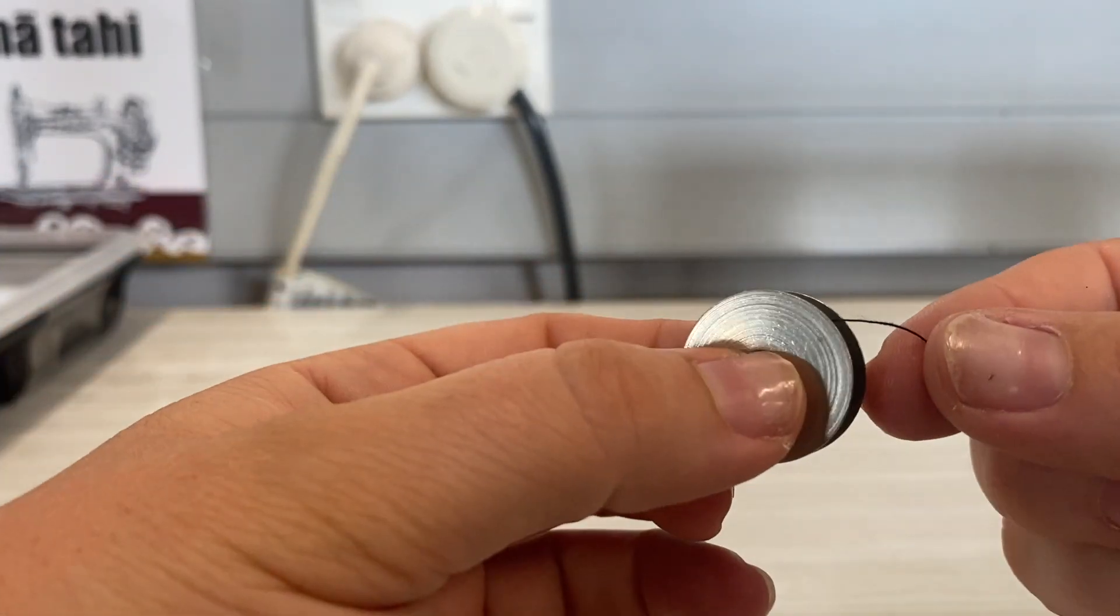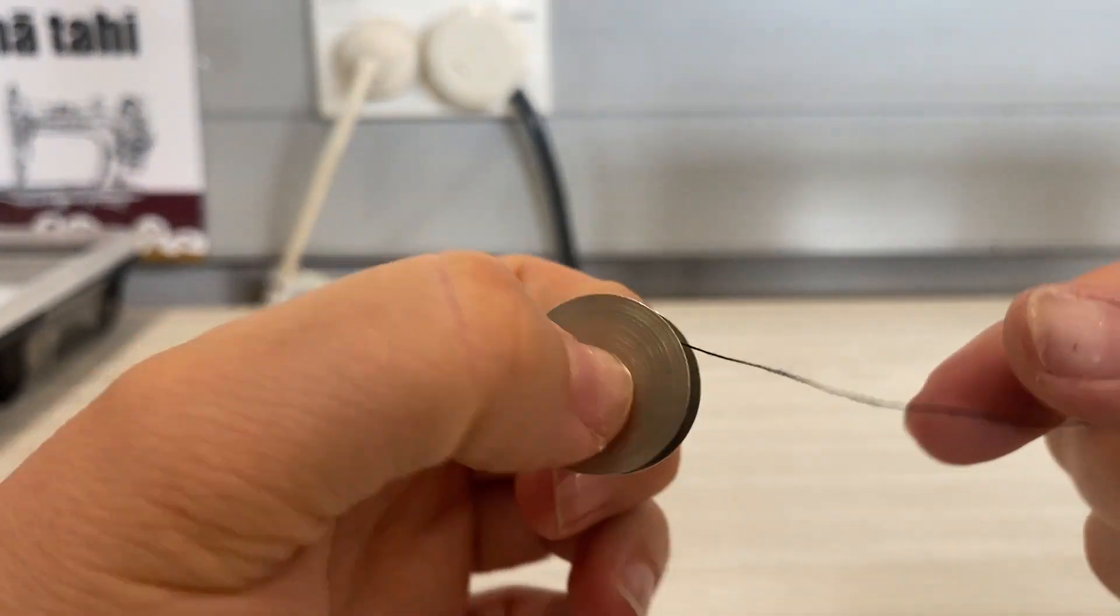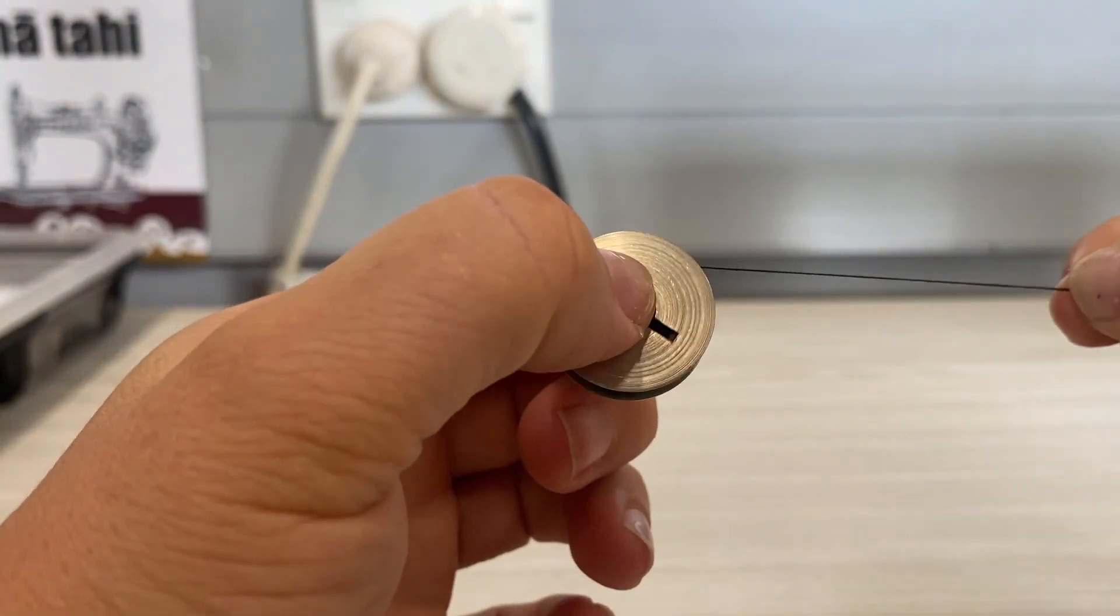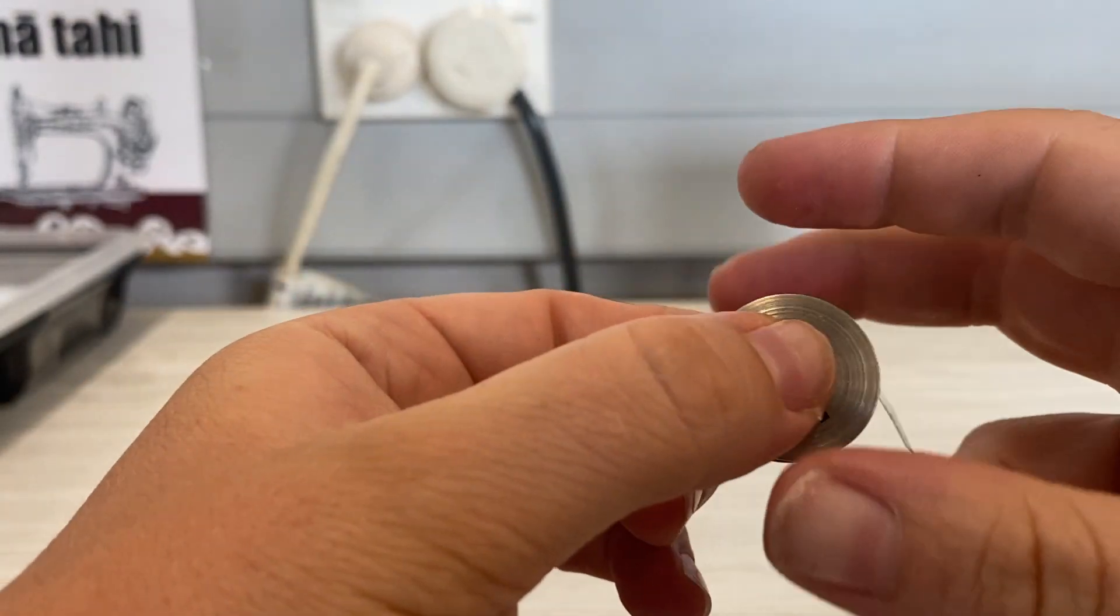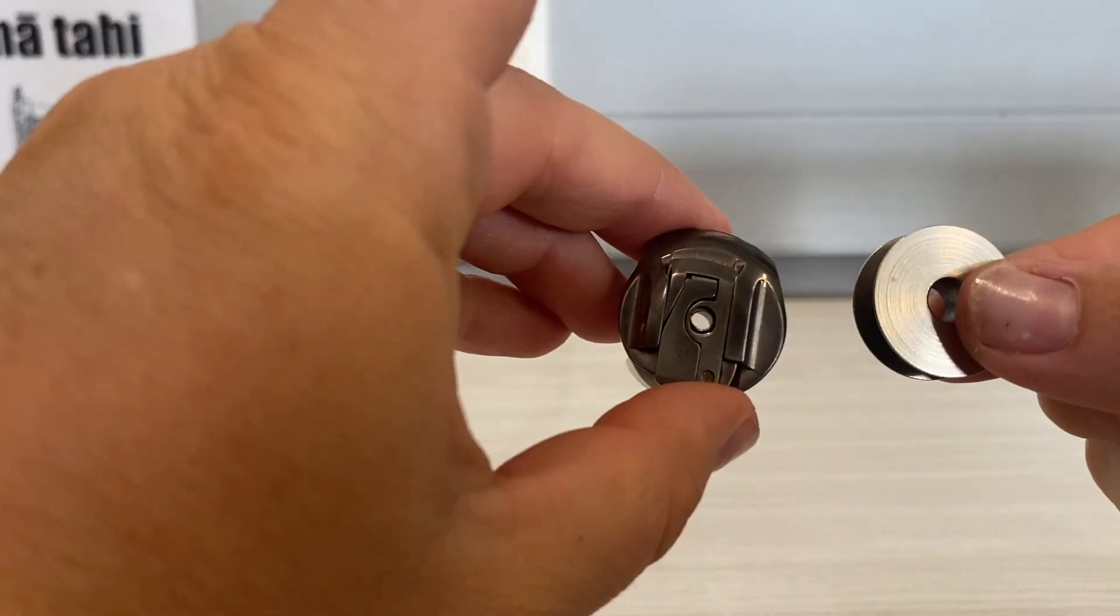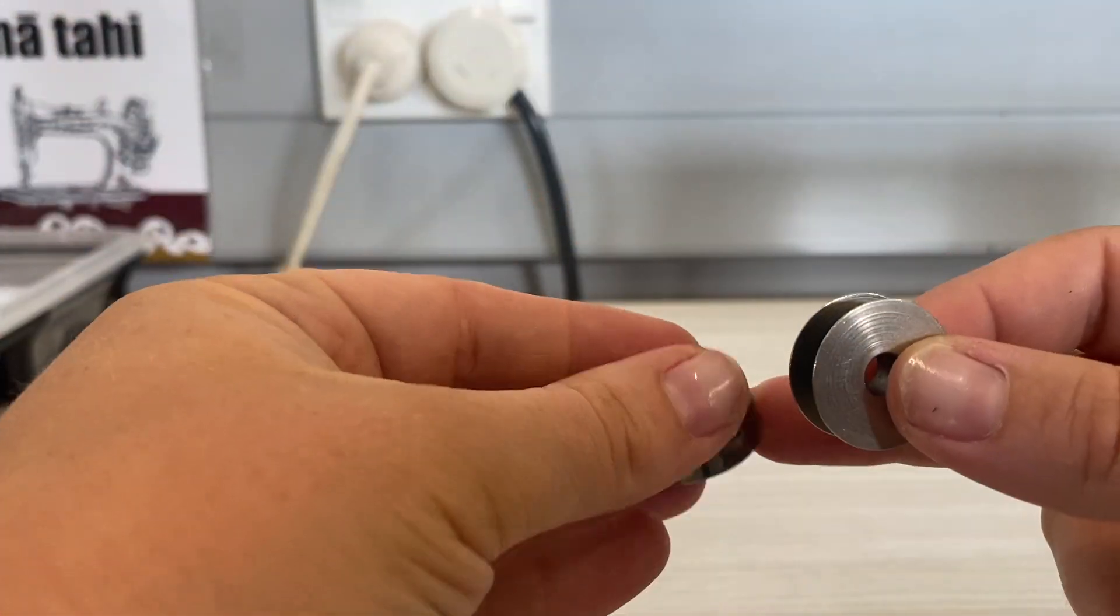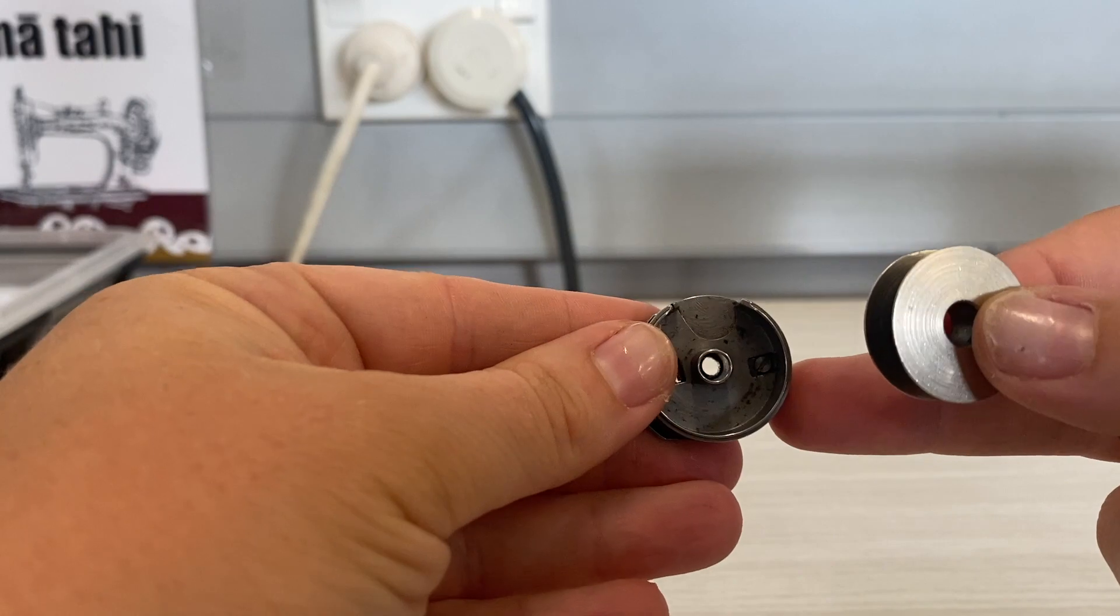Thumb and index finger pull the thread—you can see it's running clockwise. Then grab your bobbin case. You want to have the big hole, that's the big gap there, facing upwards.